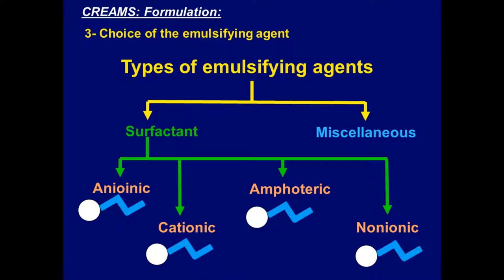All surfactants have the unique structure of hydrophilic head and lipophilic tail, but they differ in the charge on the molecule. Anionic surfactants have a negative charge on the hydrophilic part. Cationic ones have a positive charge on the hydrophilic part. Amphoteric surfactants have both charges — a positive and a negative charge. For example, if a molecule has a carboxylic group carrying negative charge and an amino group carrying positive charge, this molecule is amphoteric.